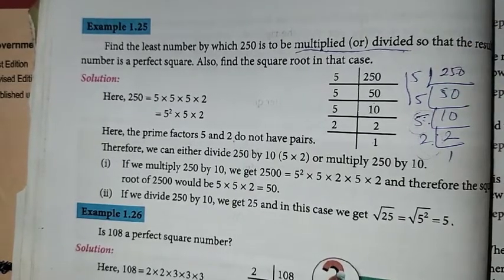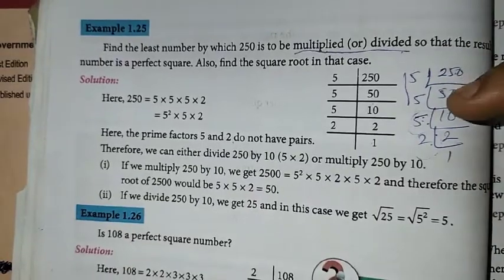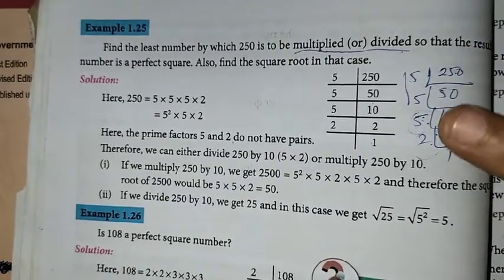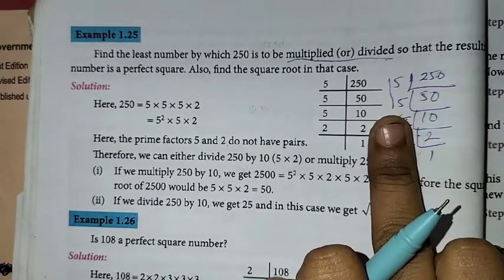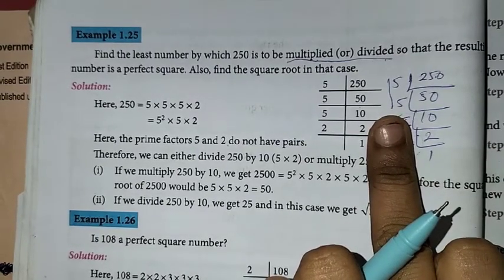Divided, which number to be divided. If it is perfect square this pair, this pair is removed, correct. 10 should be divided to make it as a perfect square, this pair.